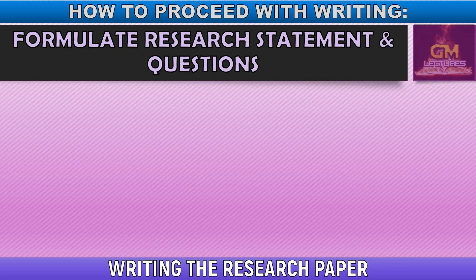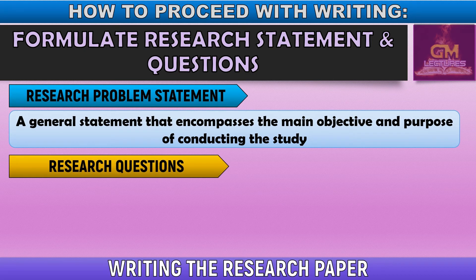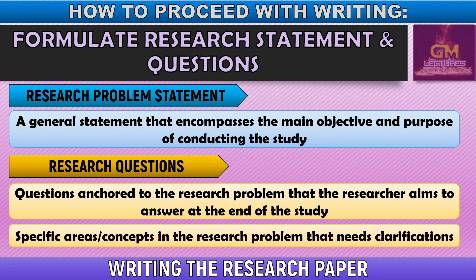After constructing the background of the study, we proceed with formulating the research statement and questions. A research problem statement is a general statement that encompasses the main objective and purpose of conducting a study. Research questions are questions anchored to the research problem that the researcher aims to answer at the end of the study. Research questions are specific areas or concepts in the research problem that need clarification, and they are simply a more specific version of the research problem statement.